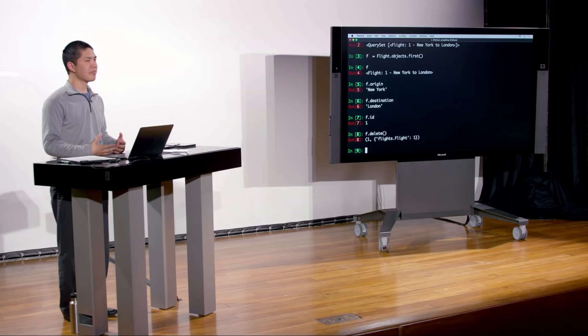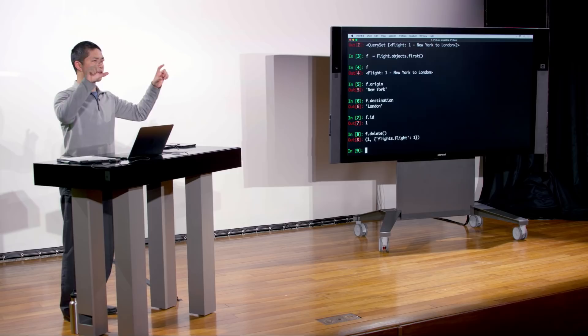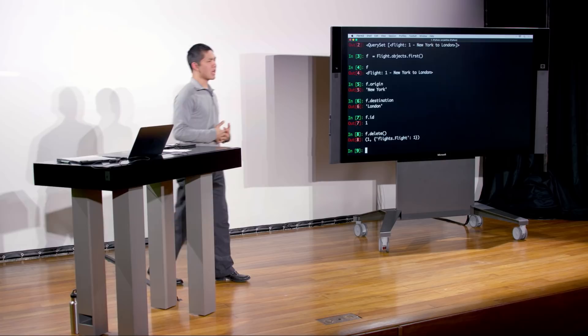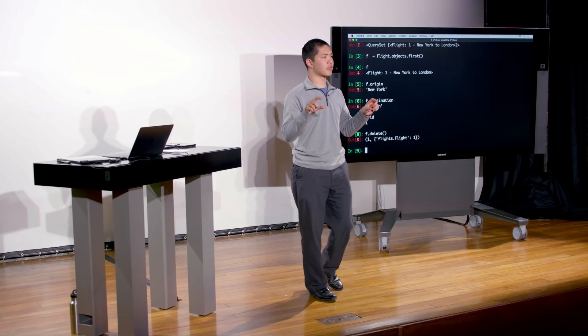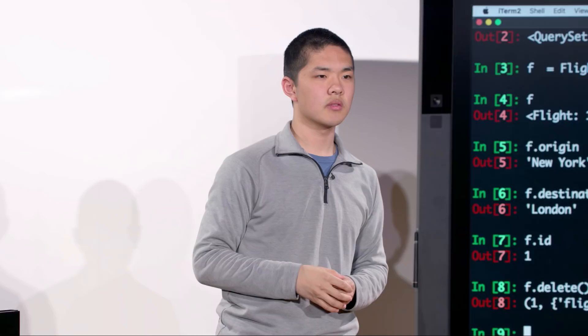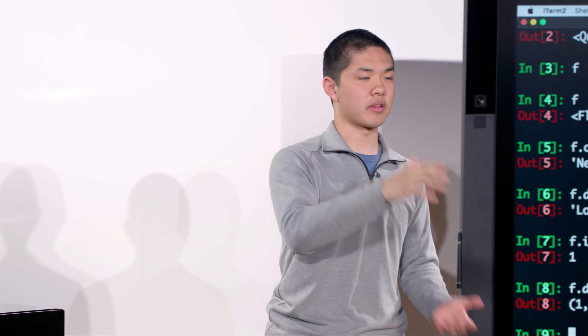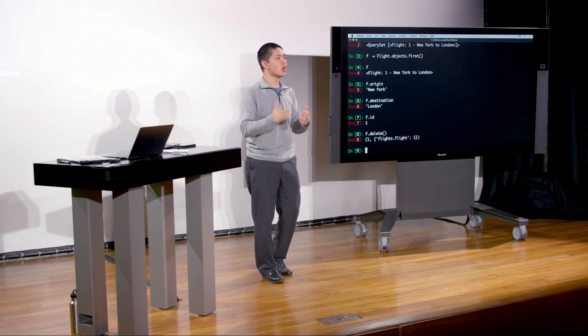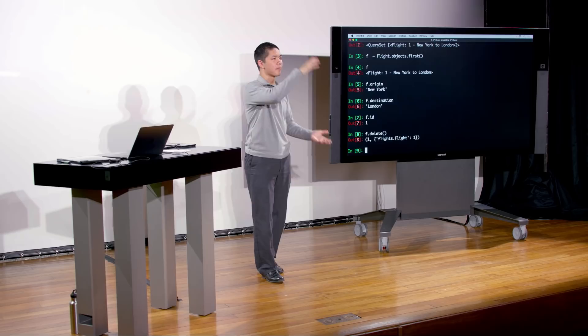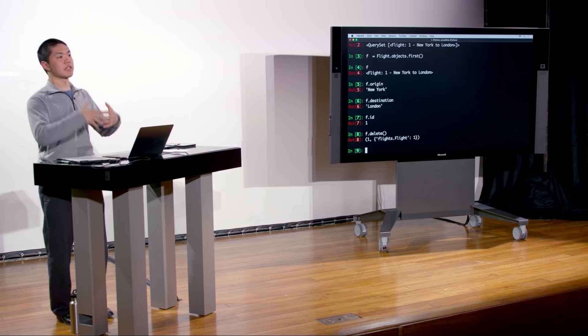Building on this, let's say rather than defining origin and destination as CharFields where I type text, I want something that makes more sense from a design perspective for an airline application. Instead of a text field, I'd use something like an ID field referencing a separate airports table — so the flights table references the ID of an airport rather than storing the string 'New York'. I'll create a new Airport class with a code field — the three-character airport code, max_length 3 — and a city field, max_length 64.